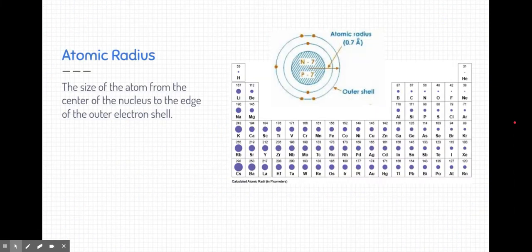Let's start with atomic radius. The definition of atomic radius is just the size of an atom from the center of a nucleus to the edge of the outer electron shell. You're probably familiar with radii or radius in math, where you just have a circle and it's from the center to the outside edge, and we're kind of considering atoms to be the same thing, only it's a three-dimensional model.